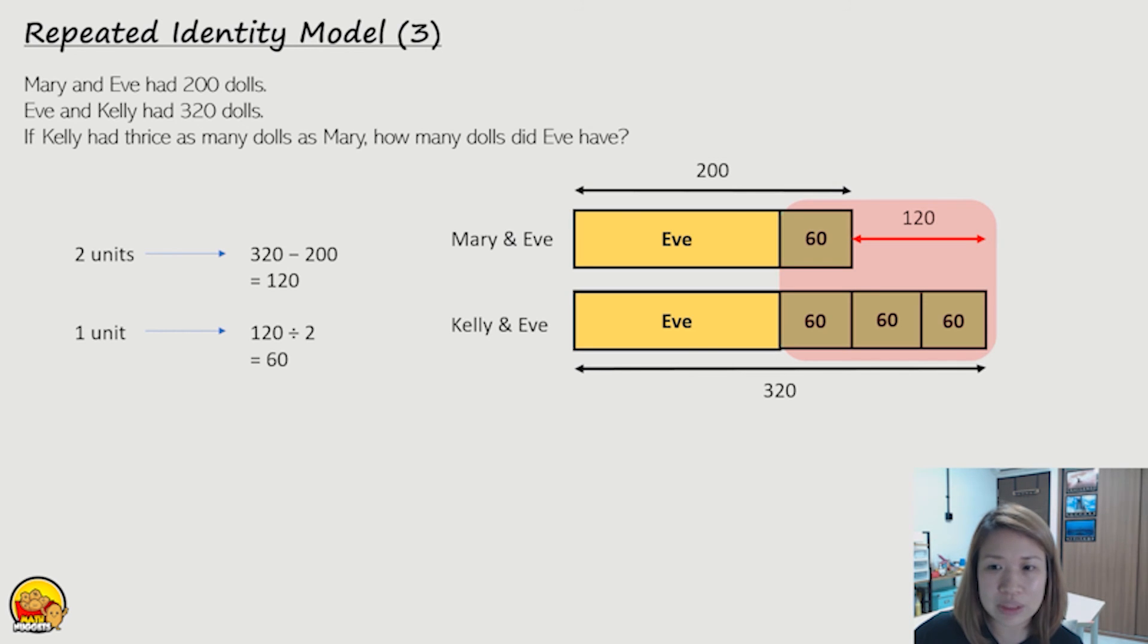Next, the question wants us to find Eve. So how do we find Eve? Let's look at the top bar, Mary and Eve. If we know that Mary has 60, which is the last unit at the back, we want to find the yellow part, which is Eve, we can take 200 minus Mary, right?